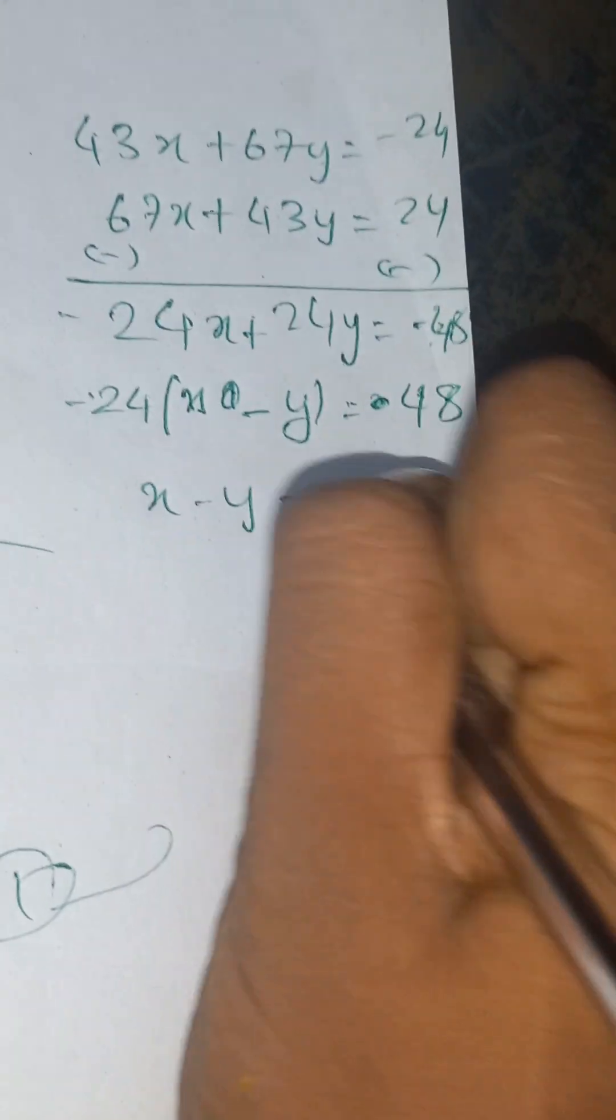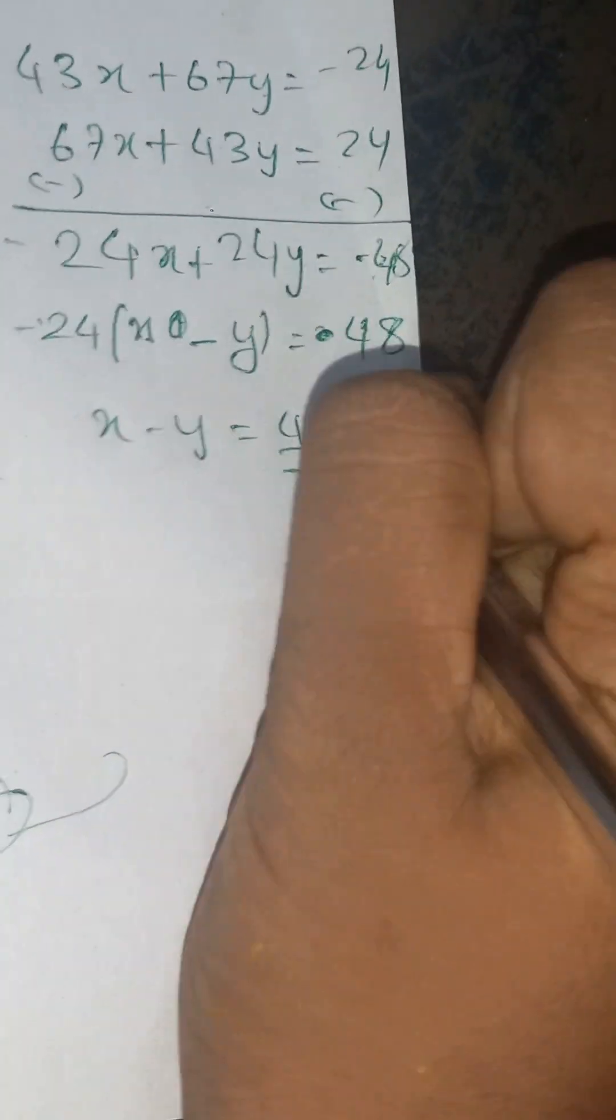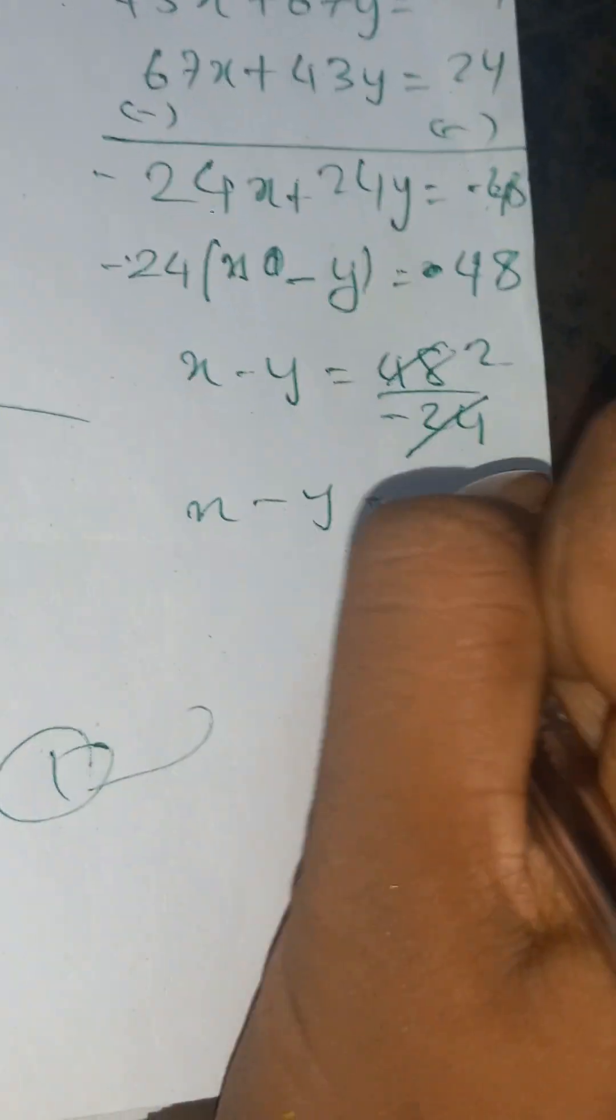So here plus is there. Do it like that, which is equal to -48, so you're taking common over here. You have to remember that. So x - y = 48 / -24, so x - y = -2.